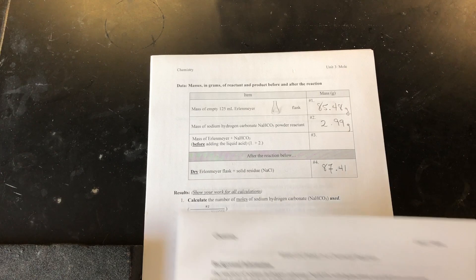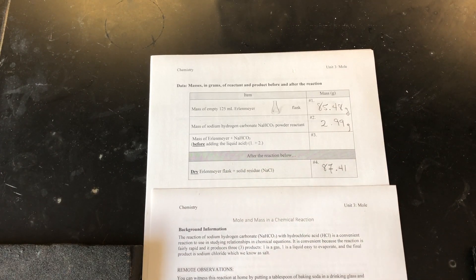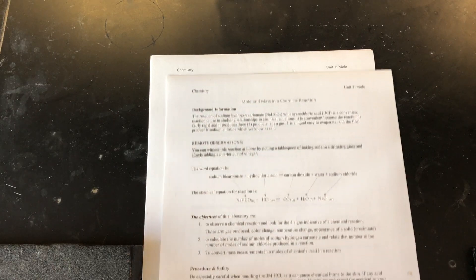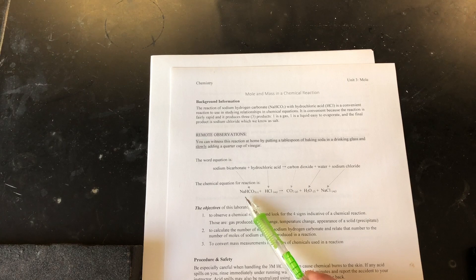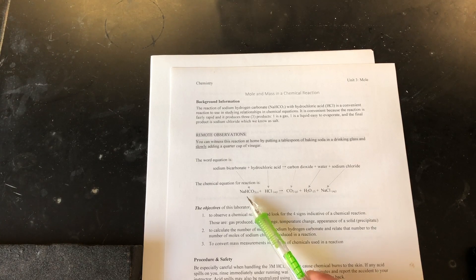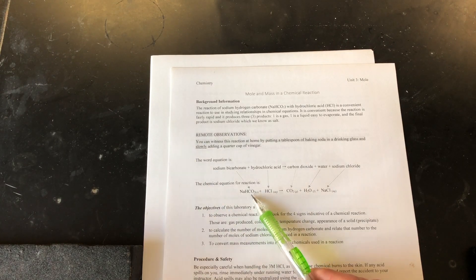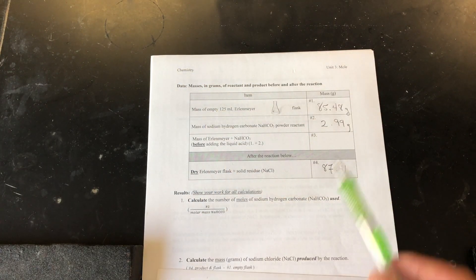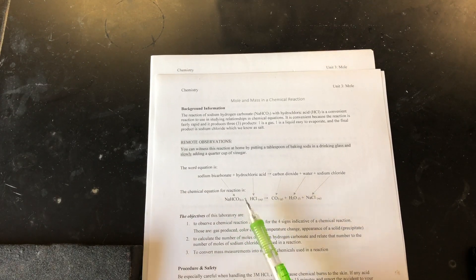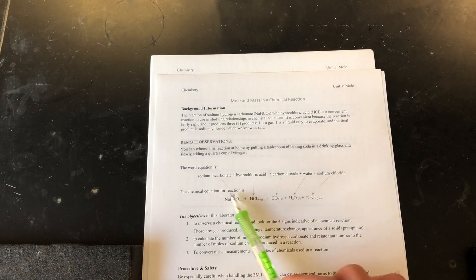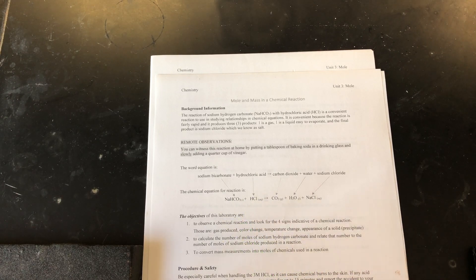Now we have all of the information that we need to complete the calculation and to determine the number of moles of sodium bicarbonate that went into the reaction. We can calculate that because we know that we started with 2.99 grams of the sodium bicarbonate. So we can find the molar mass of the sodium bicarbonate and calculate the number of moles that we used.